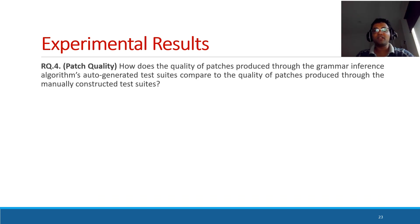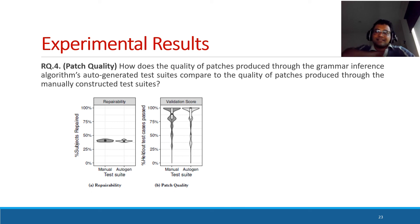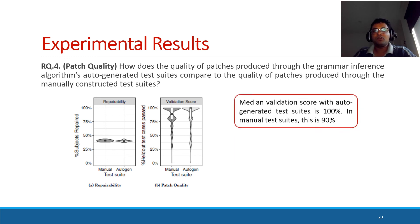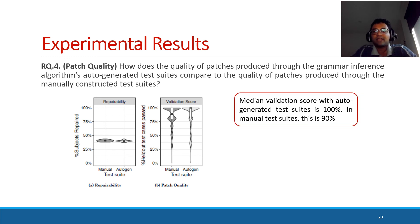Our final research question is on automated program repair. Here, we compared the manual test suites given by the benchmark with Grammar2Fix auto-generated test suites. Our results suggest that less than 50% of subjects can be repaired with both test suites. However, the patches produced by the auto-generated test suites can pass all the test cases in the held-out test suites in most cases. Therefore, we conclude that auto-generated test suites leads to high quality repairs.